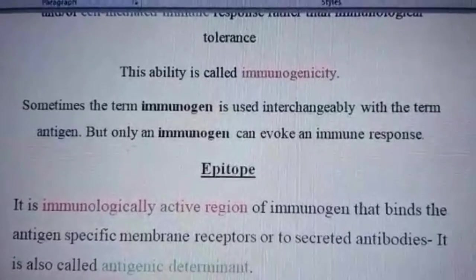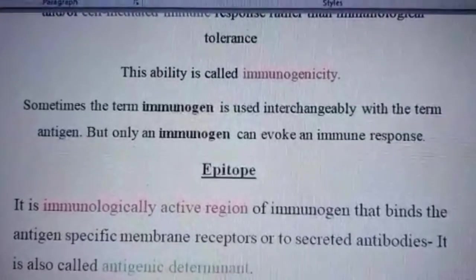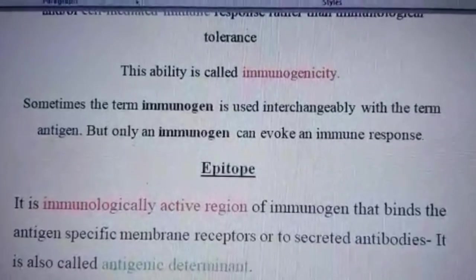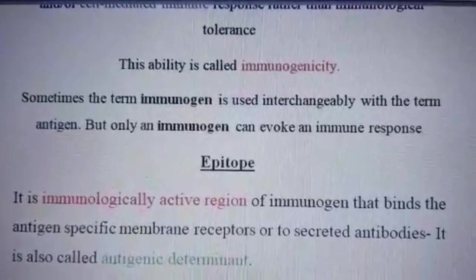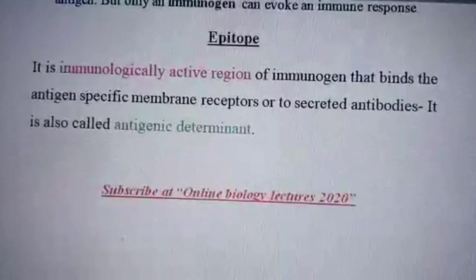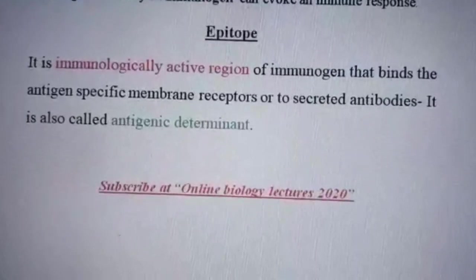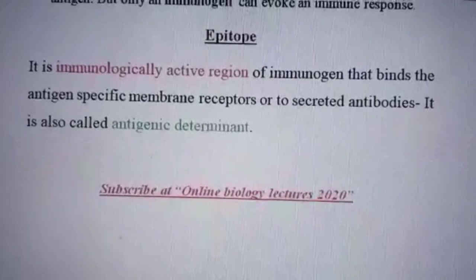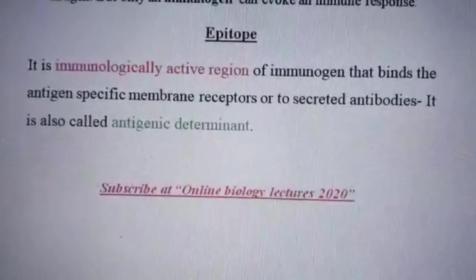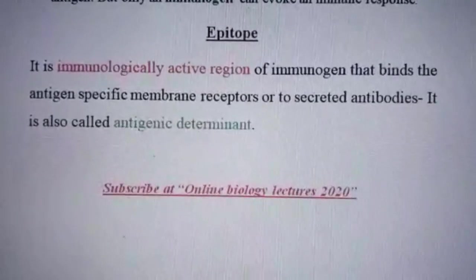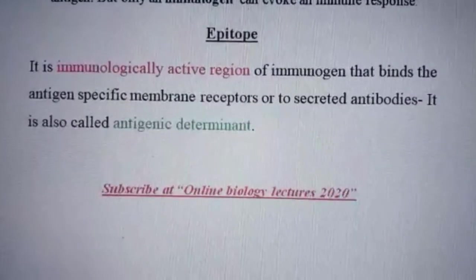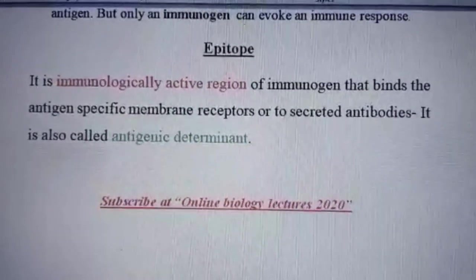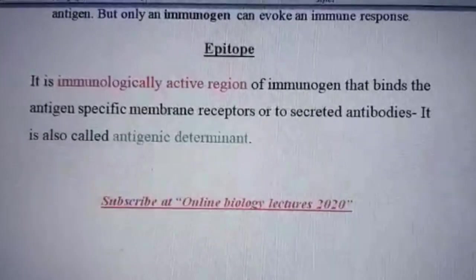Sometimes the term immunogen is used interchangeably with the term antigen, but keep in mind that only an immunogen can evoke an immune response. An epitope is an immunologically active region of the immunogen that binds to the specific antigen on antigen-specific membrane receptors or secreted antibodies. It is also called the antigenic determinant, and the antigenicity of the immunogen is determined by the epitope.